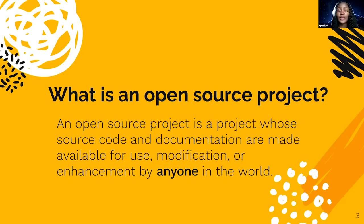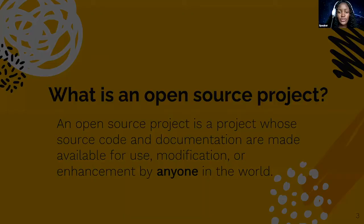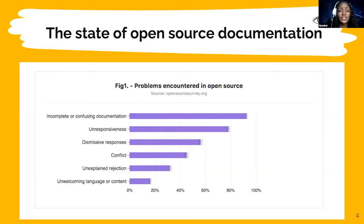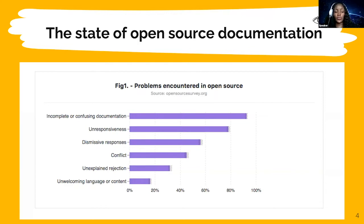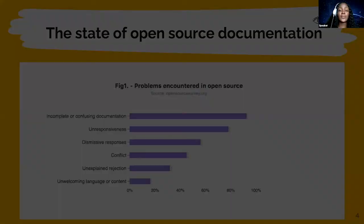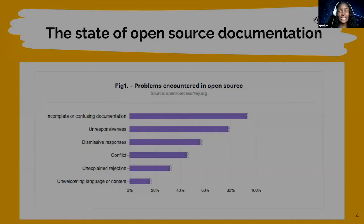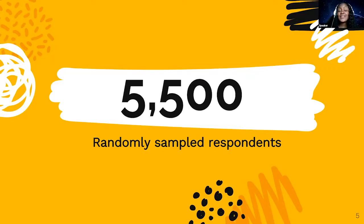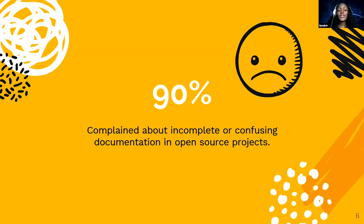In 2017, GitHub carried out a survey to understand issues people were facing in open source projects, reaching out to maintainers, designers, and technical writers. Issues raised included incomplete and confusing documentation, unresponsiveness, dismissive responses, conflict, unexplained rejection, and unwelcoming language or content. Out of the 5,500 people who responded, 90% complained that the documentation was incomplete or confusing, which shows this is actually a real problem.